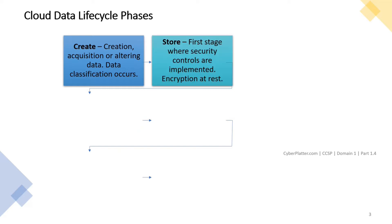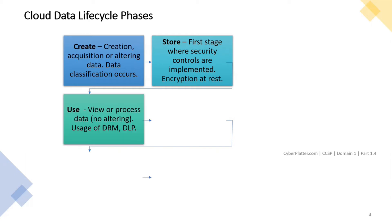The second phase is the store phase. This happens almost concurrently with or immediately after the create phase. Encryption at rest, access control lists (ACL), logging and monitoring, and backups should be considered here as security controls. This is also the first phase where security controls are implemented.